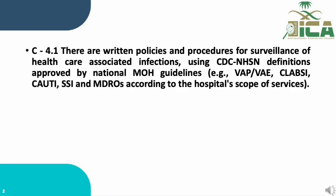There must be written policies and procedures for the surveillance of healthcare-associated infections using CDC NHSN latest definitions, which are approved by the national MOH guidelines. These should include CLABSI (central line-associated bloodstream infection), CAUTI (catheter-associated urinary tract infection), VAP (ventilator-associated pneumonia), VAE (ventilator-associated event) for adult and pediatric, SSI (surgical site infections), and MDRO (multi-drug resistant organisms) according to the hospital scope of service.